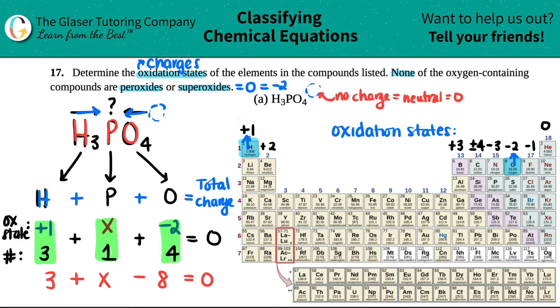So now all we got to do is just solve, right? Three minus eight is really a negative five. So I can just simplify this by saying X minus five equals zero. And if I just plus five on both sides, we kind of can see what that phosphorus oxidation state was. It was X. So X equals a plus five. And that's the oxidation state of the phosphorus.